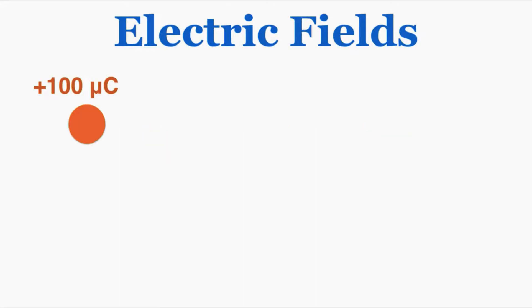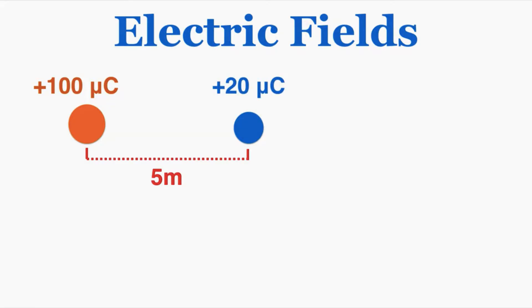This video will be about electric fields. Let's say we have a charge of 100 micro coulombs, and we measure out a distance of 5 meters away from that charge and place a second charge at that 5 meters — let's say 20 micro coulombs. We can plug this into Coulomb's law to figure out the force that the first charge will apply on the second charge.